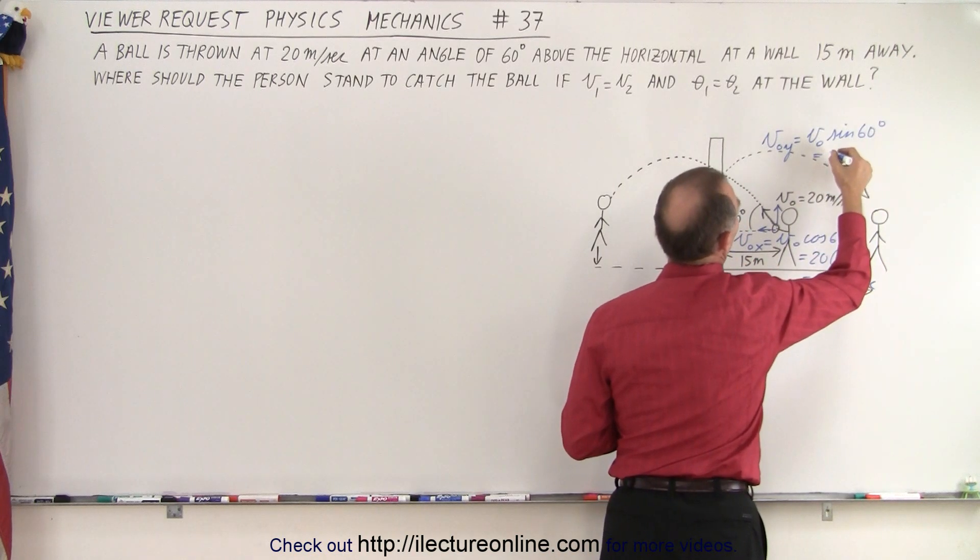And then the vertical velocity initially in the y direction is v initial times the sine of 60 degrees, which is equal to 20 meters per second times 0.866, which is 17.32 meters per second. So that gives us the initial velocity in the x direction and the initial velocity in the y direction.